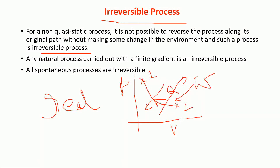Any natural process carried out with a finite gradient is an irreversible process; all spontaneous processes are irreversible. In practice, it is not possible to carry out a quasi-static process because it runs infinitesimally slowly. Practically, if I run an engine this way, it would be almost impossible to achieve the objective of running the engine and producing work as fast as possible.